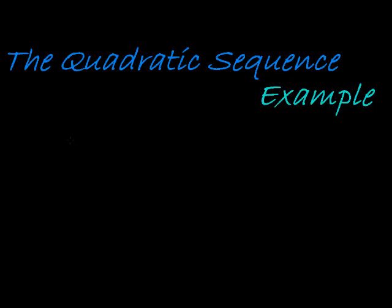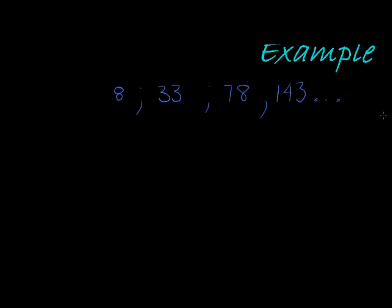Let's look at the example where the quadratic sequence is given by 8, 33, 78, 143, and so on. They don't tell me what type of sequence, they just ask me to find the general term, find T_n.